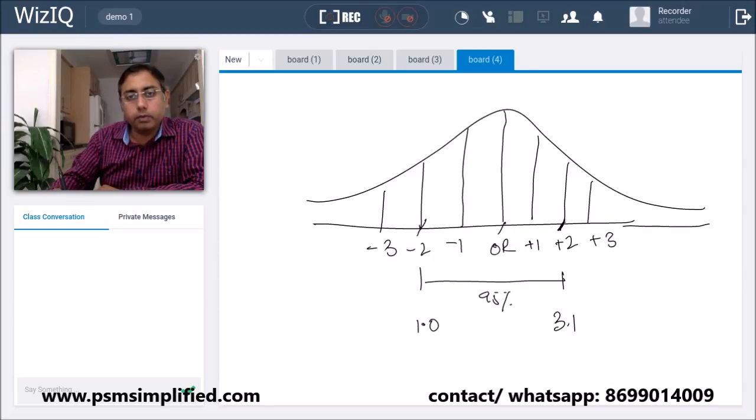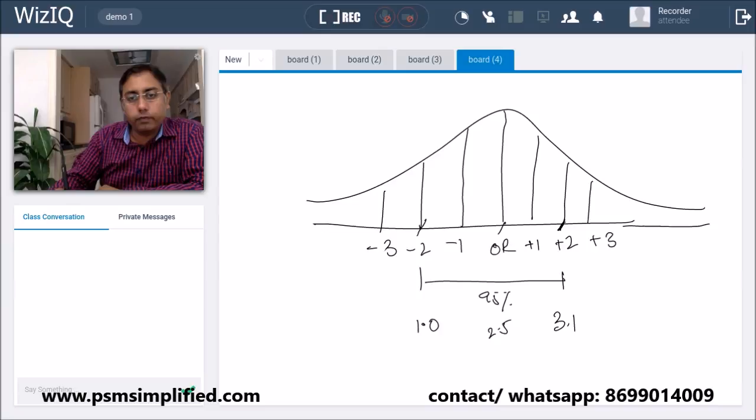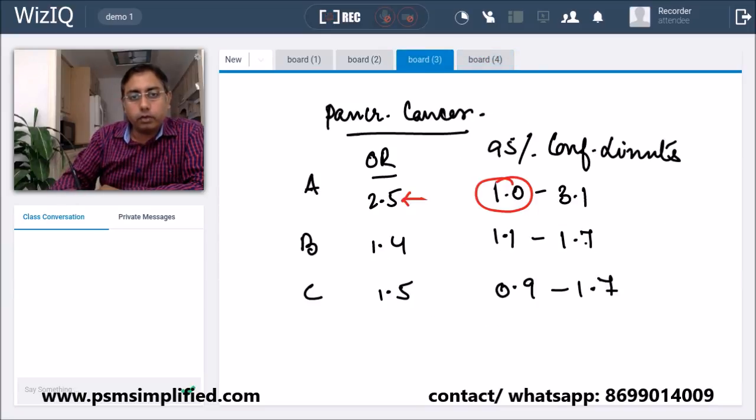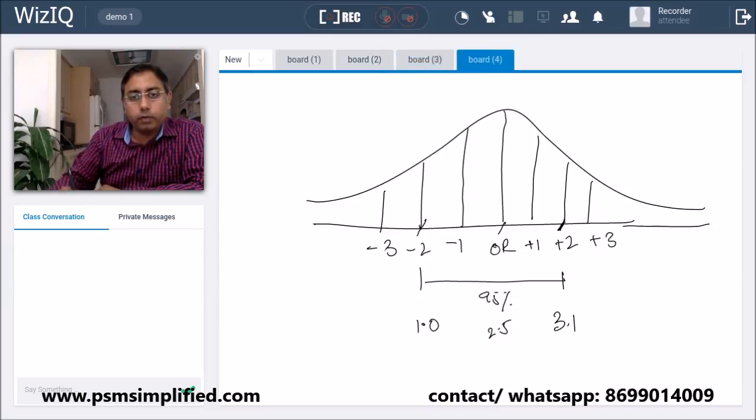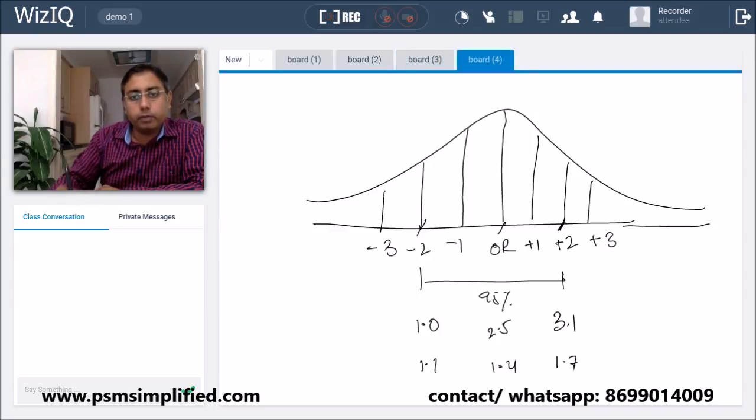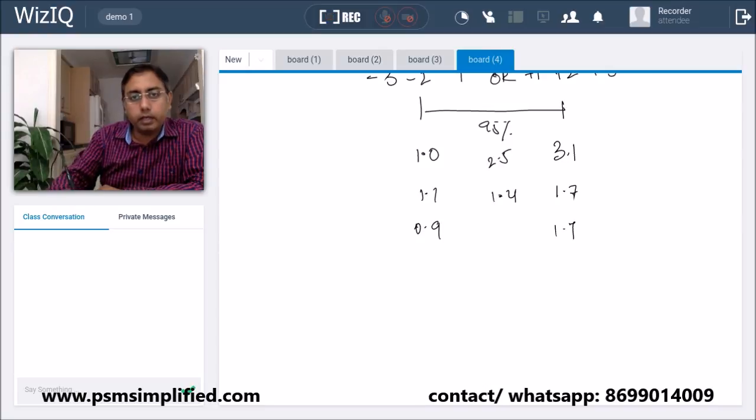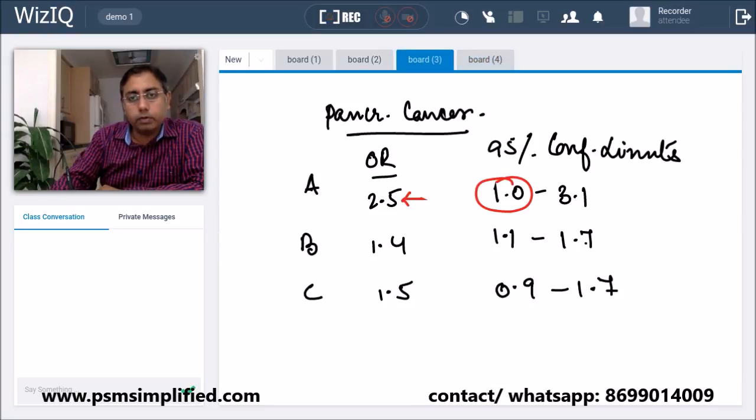The center point as we can see is 2.5. If we look at option B, it's 1.4 with 1.1 to 1.7. And option C is 1.5 with 0.9 to 1.7, with the center at 1.5.